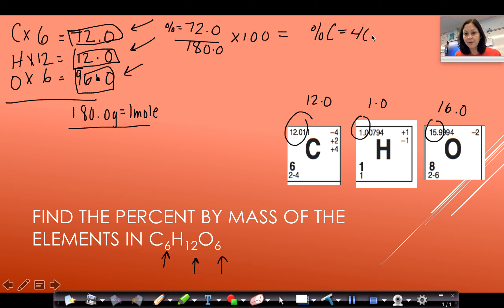If I want to do my percent of hydrogen, I'm going to do the 12.0 over 180.0 times 100. When I do that on my calculator, I get that my percent of hydrogen equals 6.67%.